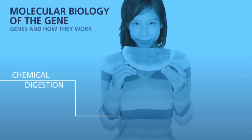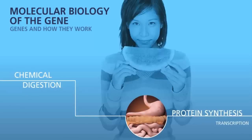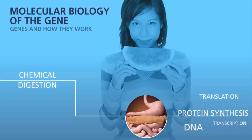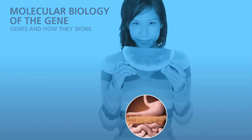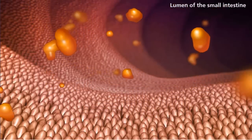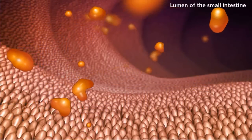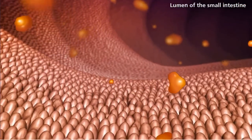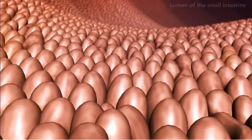In order for our bodies to function, we need to supply them with a variety of nutrients we get from our diet. Our bodies cannot use the food as it is when it enters our digestive system. The process of chemical digestion uses different proteins and enzymes to break down the food particles into usable nutrients our cells can absorb.